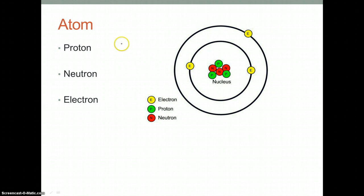So the atom is known to consist of three parts: the proton, neutron, and electron. The proton has a positive charge, the neutron has a neutral charge, and the electron has a negative charge.